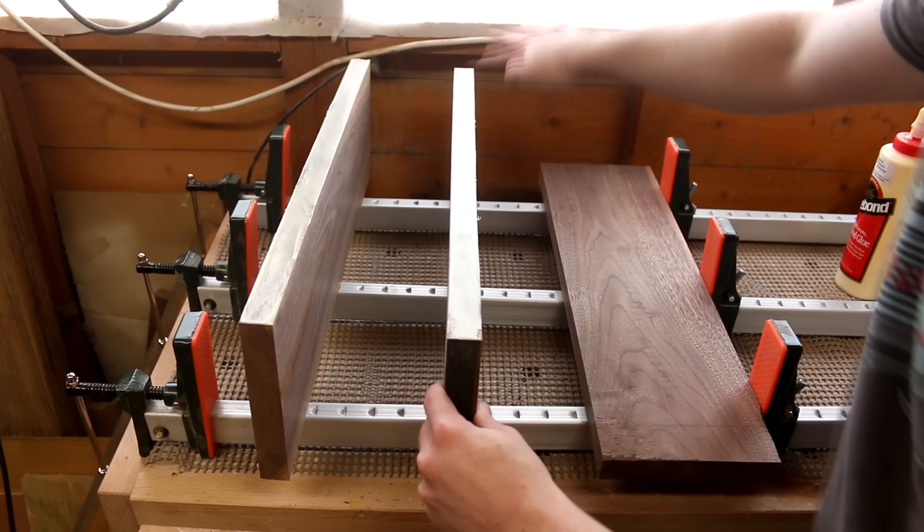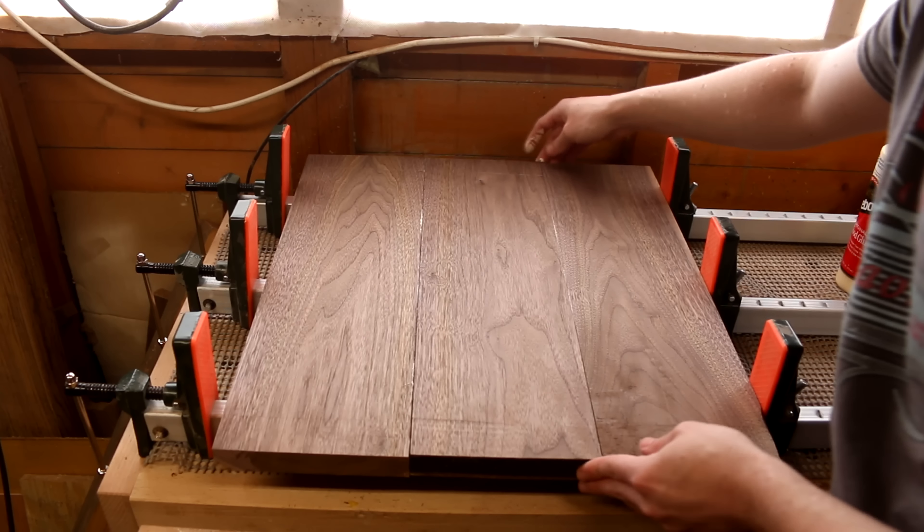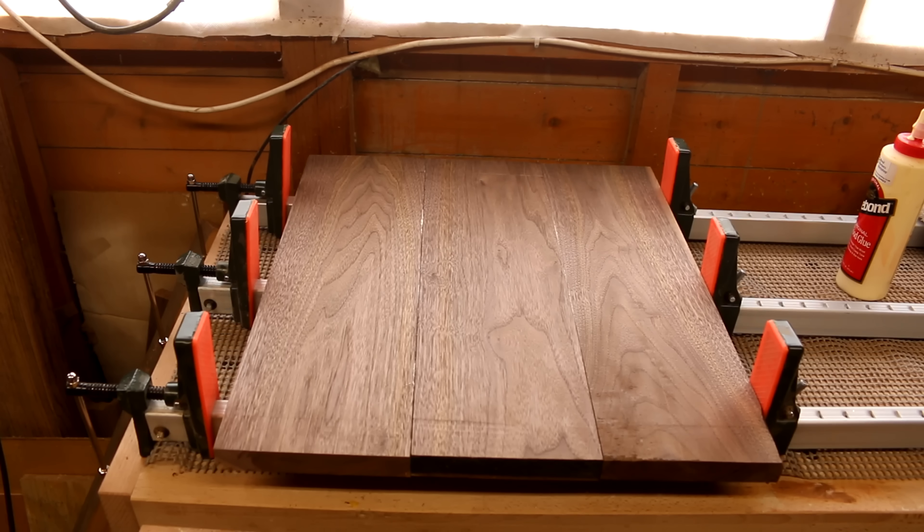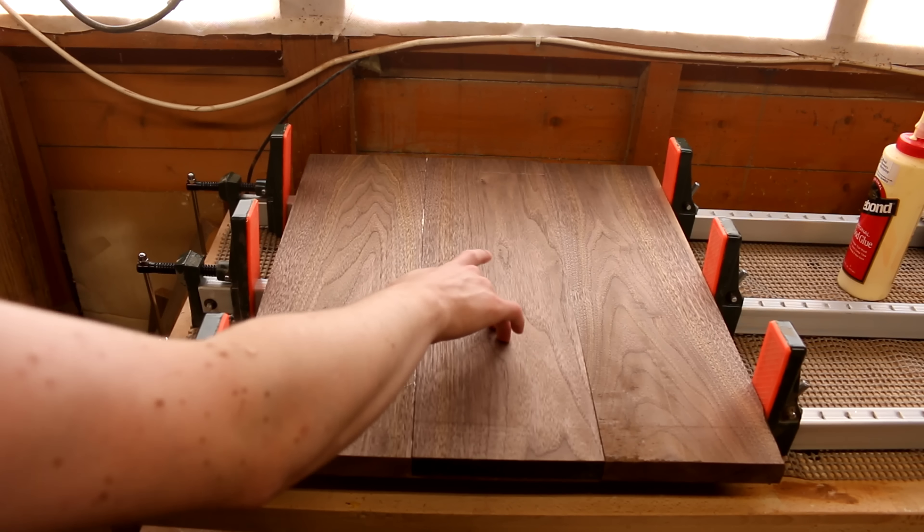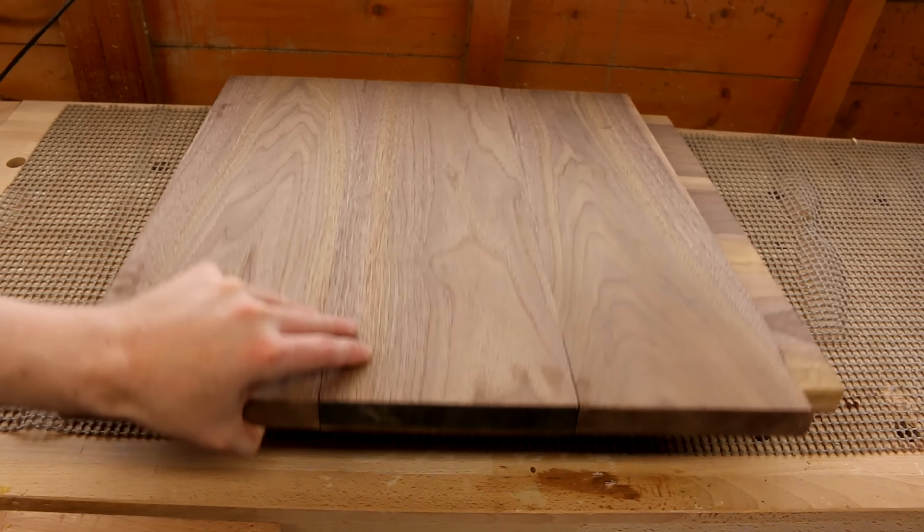You could of course use any material you like. I think some MDF painted or even plywood with the exposed edges could look great. I had to glue up the pieces of walnut I had and I made a square that was just over 45 centimeters by 45 centimeters and 5 centimeters thick.